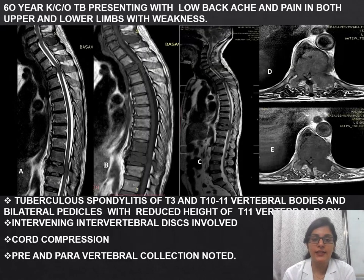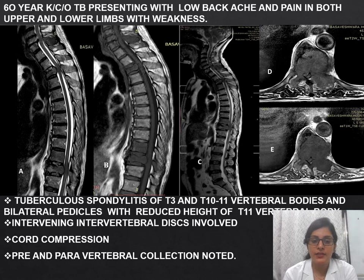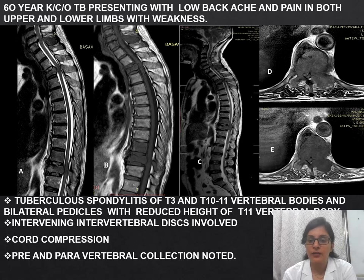Next patient: a 60-year-old male, known case of tuberculosis, presenting with low backache and upper and lower limb weakness. MRI shows tuberculosis spondylitis of T3 vertebral body and T10 to T11 vertebral bodies, with bilateral pedicle involvement and reduced height of T10. The disc is also involved, leading to cord compression, and there is pre- and paravertebral collection.